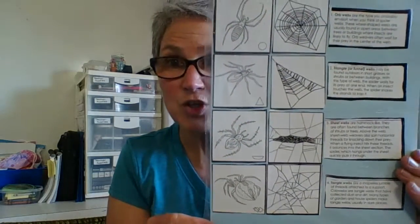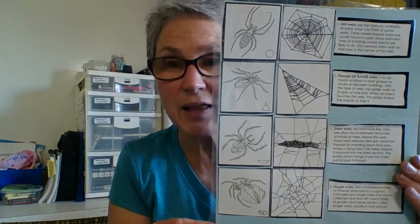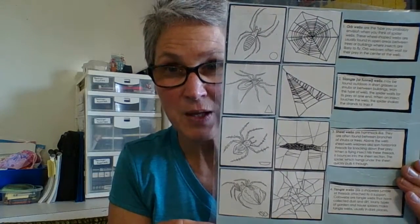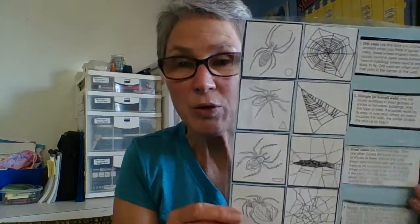It's going to be your job to get the blank piece of paper and you will need to match the spiders to the correct webs and the correct descriptions. So to help you, you can see the shape of this orb web and you can see the circle by the spider. That gives you a pretty good clue which spider belongs to which web.